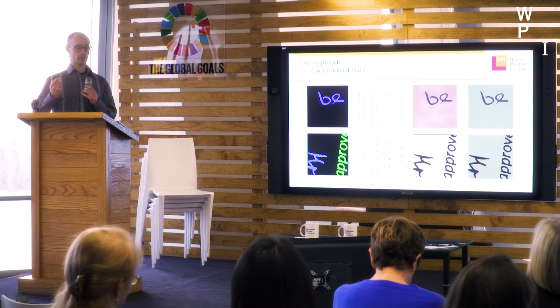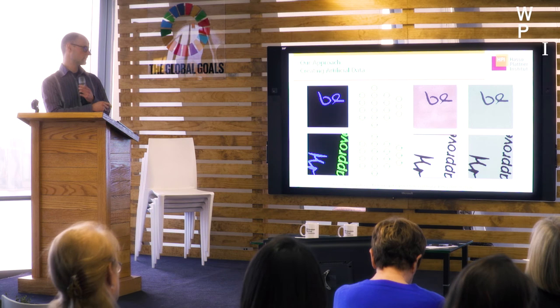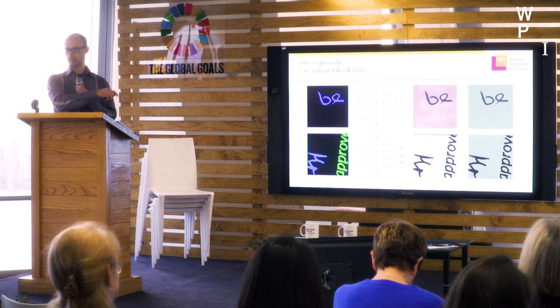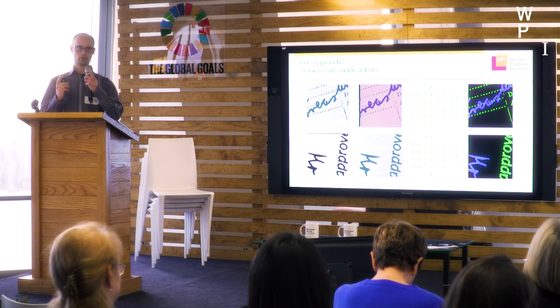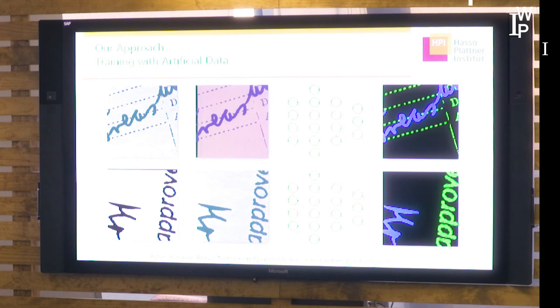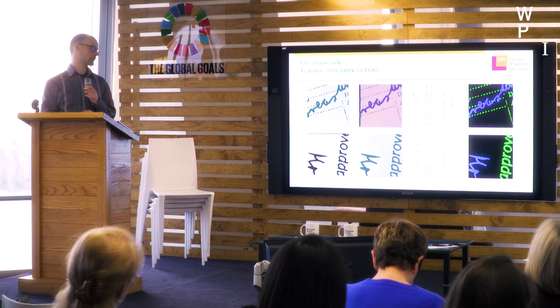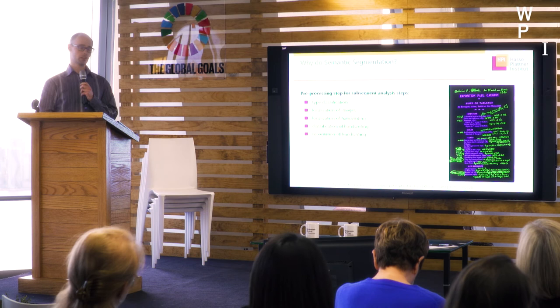We take simple structured images, put them through a network, and generate realistic-looking images. We then train a model using both the input images for generation and the generated images, hoping the model can work in reverse on real data. We do this for each part of the input image and stitch everything together to get a fully segmented image.